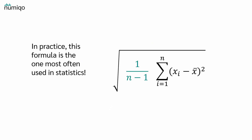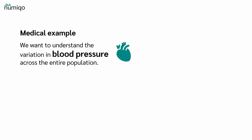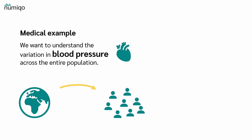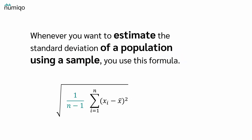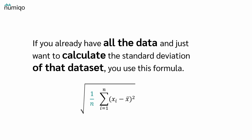In practice, this formula with n-1 is the one most often used in statistics. Let's look at a second example — a medical example. We want to understand the variation in blood pressure across the entire population. Of course, we cannot measure the blood pressure of everyone, so we take a sample. If we want to use this sample to estimate the standard deviation in the population, we use the formula with n-1. Whenever you want to estimate the standard deviation of a population using a sample, you use this formula. If you already have all the data and just want to calculate the standard deviation of that data set, you use the other formula.